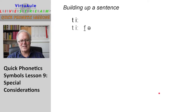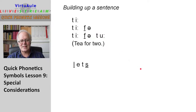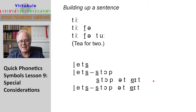Let's build up a sentence: tea — tea for — tea for two. That's how the sound is: tea for two. Let's stop — stop. You see, we have the elision here: the 'pet' and then 'tate', so it's all like one word — stop. Let's stop at eight — let's stop at eight. Try that.